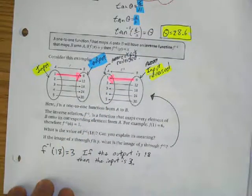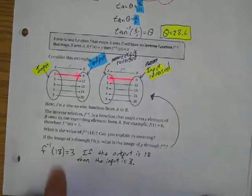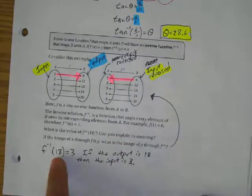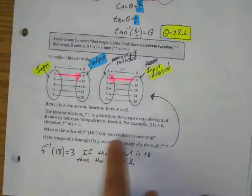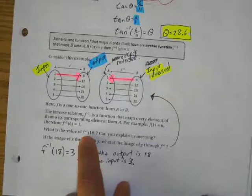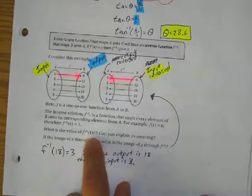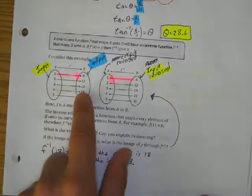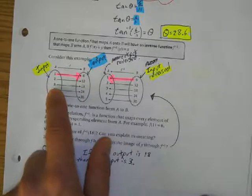In this first example, it asks: can you find the value of the inverse of 18? Looking at the mapping, the inverse of 18 — where 18 is the output — the new output would be 3.